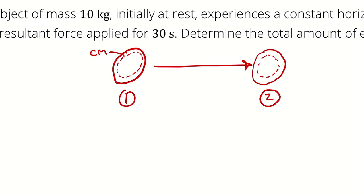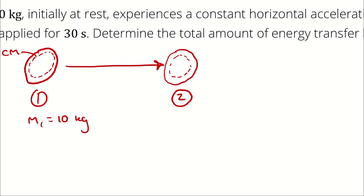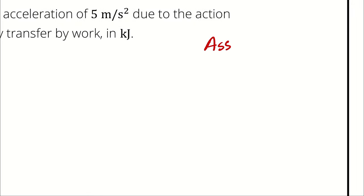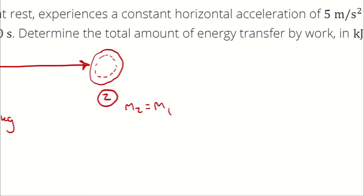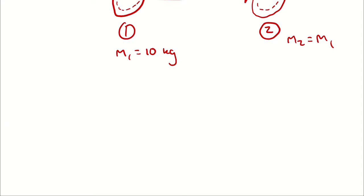The mass is initially 10 kilograms. If I make the assumption that it's a constant mass, then M2 is equal to M1. I will write that down: mass doesn't change. I probably could have written that as 'mass is constant' or 'change in mass is 0,' but we're not here to write fewer words — we're here to solve a problem.